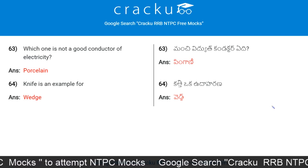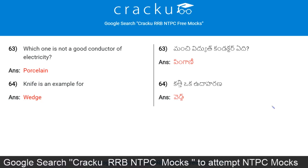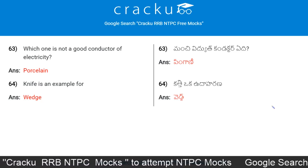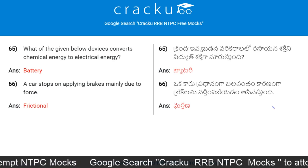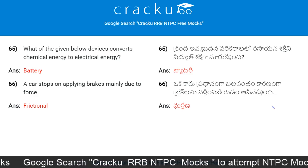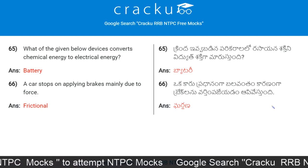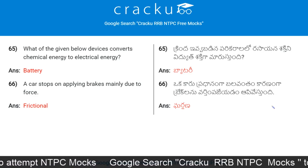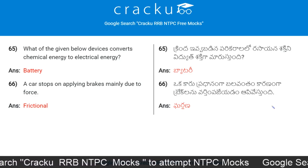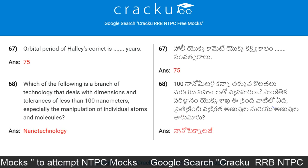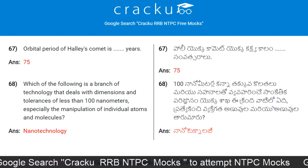Which one is not a good conductor of electricity? Porcelain. A knife is an example of a wedge. Which device converts chemical energy to electrical energy? Battery. A car stops on applying brakes mainly due to the frictional force. The orbital period of Halley's comet is 75 years.